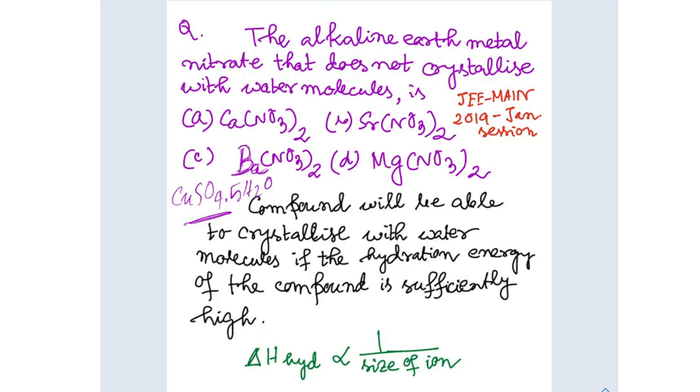The alkaline earth metals are beryllium, magnesium, calcium, strontium, and barium.